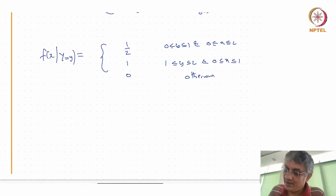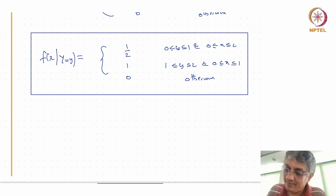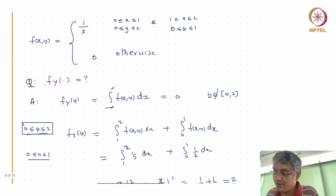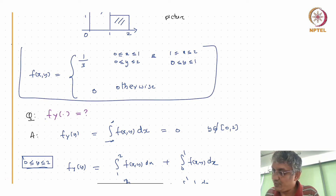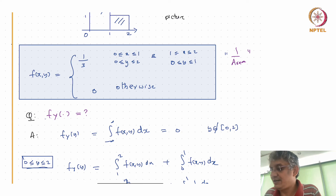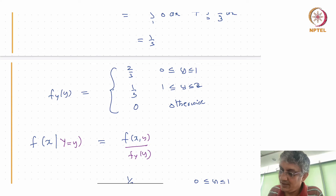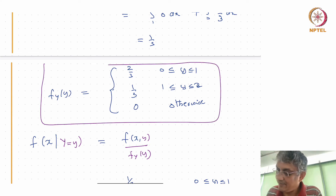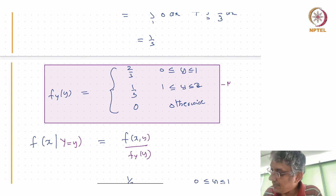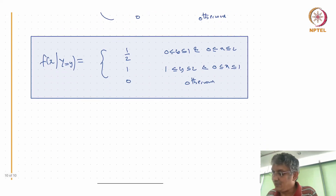That's the conditional density. We computed the joint density as 1 over the area, then integrated out x to find the marginal density of Y, and finally computed the conditional density of X given Y.